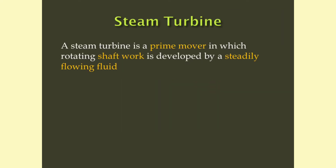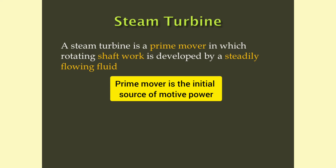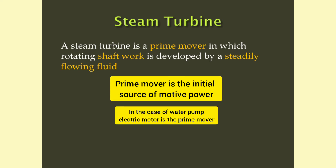Steam turbine is a prime mover in which rotating shaft work is developed by a steady flowing fluid. A prime mover is the initial source of motive power. For example, if we are pumping water using a pump, the prime mover is the electric motor, because it is the initial source of motion.